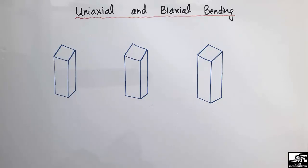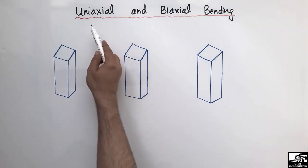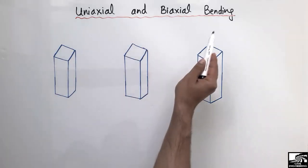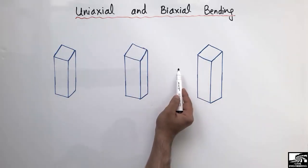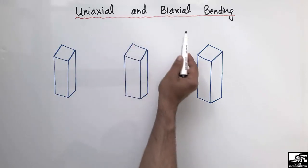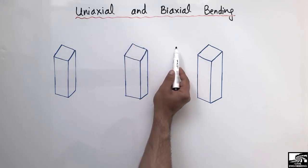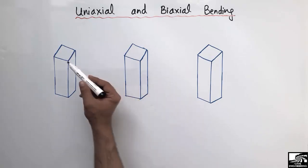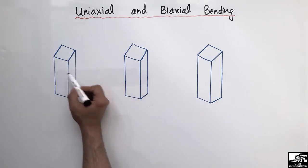Hello guys, welcome back to Civil Engineering YouTube channel. Please subscribe to our channel for daily civil engineering videos. Today our lecture is about the difference between uniaxial and biaxial bending in columns. I will try to explain the main difference between these two types of bending in columns with the help of examples.